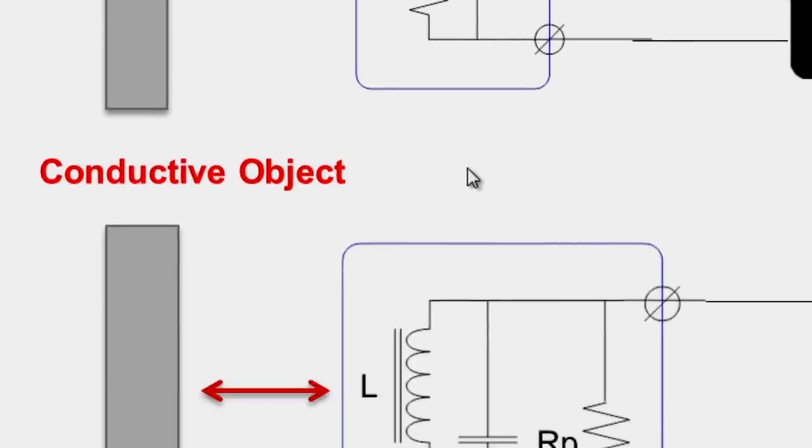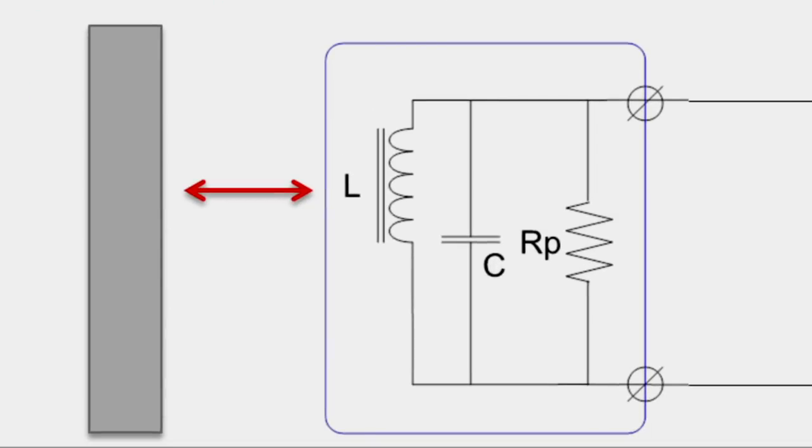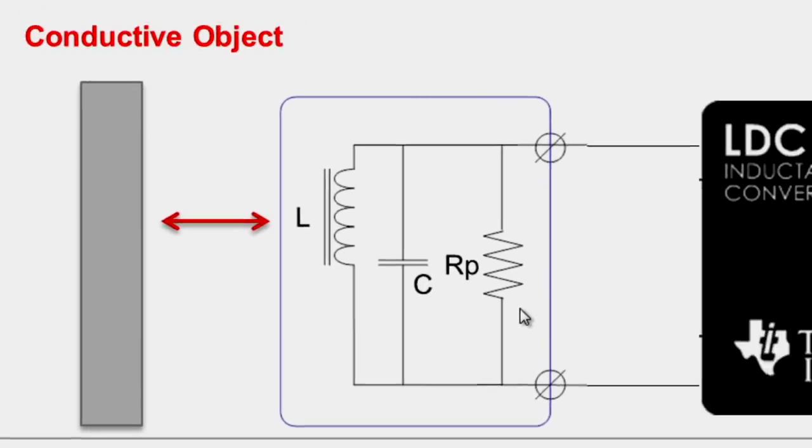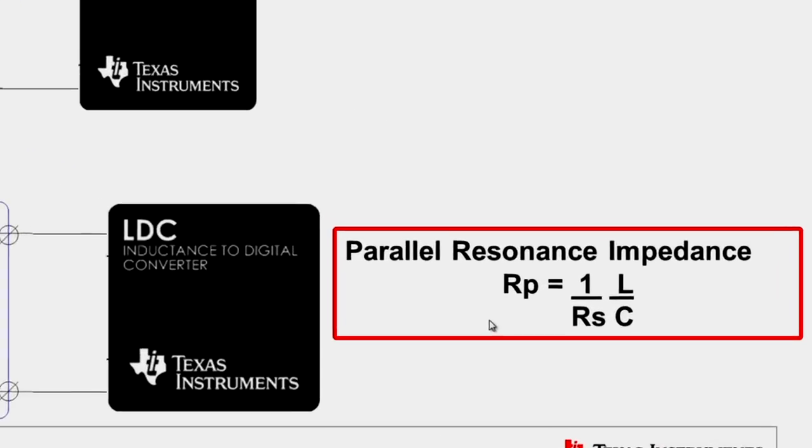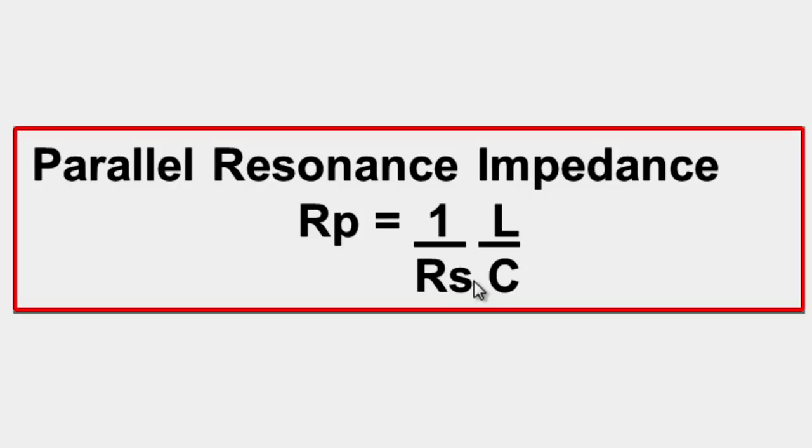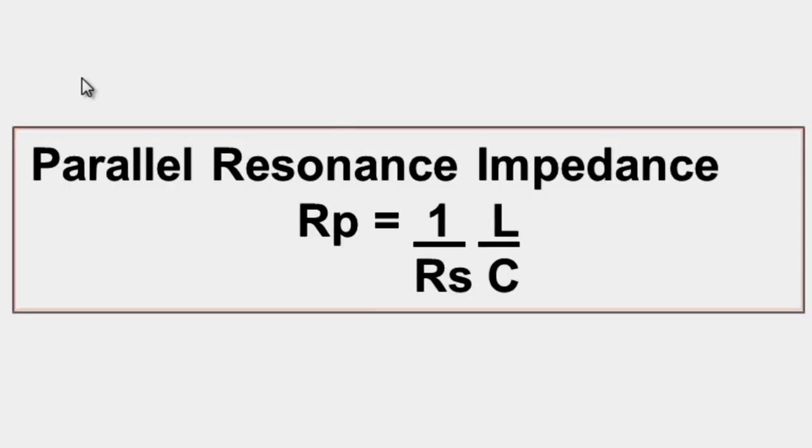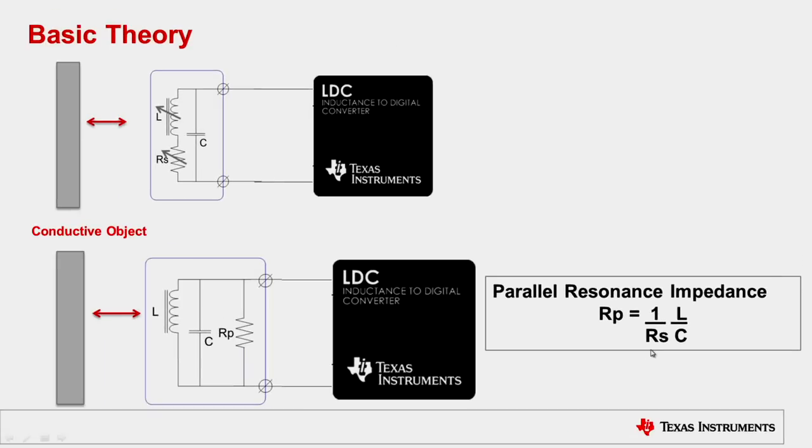One way to model the series resistor is this equivalent parallel resistance. This equivalent parallel resistance is given by this formula. The variation of the series resistor is in the range of few ohms. When you convert it into the parallel equivalent, it will change from few kilo ohms to hundreds of kilo ohms.